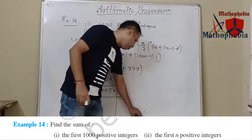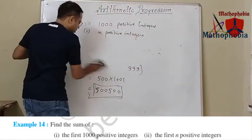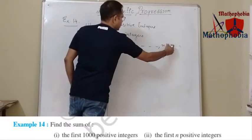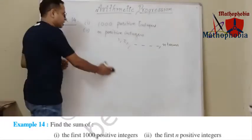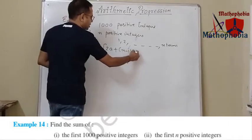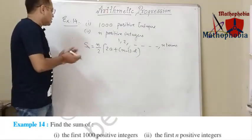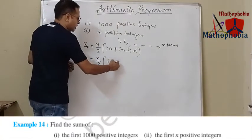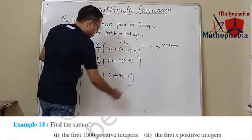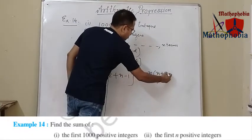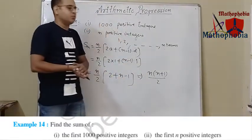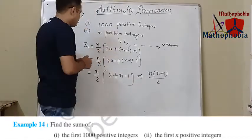Now to find the sum of the first n positive integers, the sequence is 1, 2, up to n terms. Applying the same formula: Sn equals n upon 2 times 2a plus n minus 1 into d. The value of a is 1 and d is also 1, so we get n upon 2 times 2 plus n minus 1, which simplifies to n upon 2 times n plus 1, giving n times n plus 1 divided by 2. This is the sum of the first n positive integers.